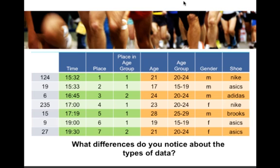Compare that to place of finish. We know that second place is one place behind first place — and it turns out that's actually just one second behind. Third place is also one place behind second place, but in that case it's over a minute behind. So when looking at place of finish, we know the order in which they finished, but we don't know the relative distance between finishers. Similarly with age groups, we know the order — youngest, younger, young, older groupings — but we don't necessarily know exactly how far apart two ages are.